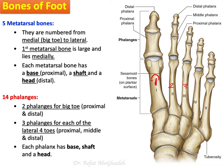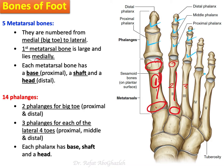The first metatarsal is the largest and is located medially. Each metatarsal has a base, shaft, and head — proximal to distal. As for the phalanges: the great toe has two — proximal and distal. Each of the other four toes has three phalanges — proximal, middle, and distal. Each phalanx also has a base, shaft, and head.